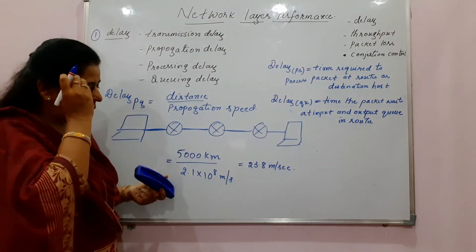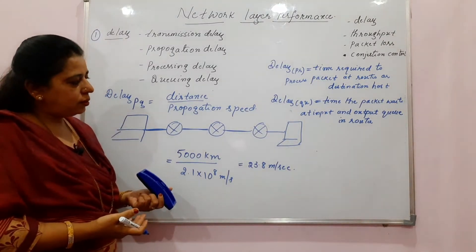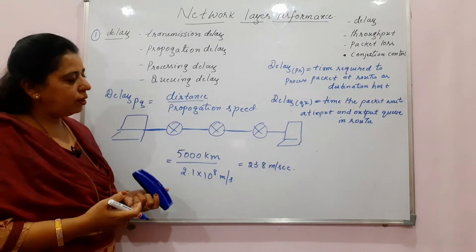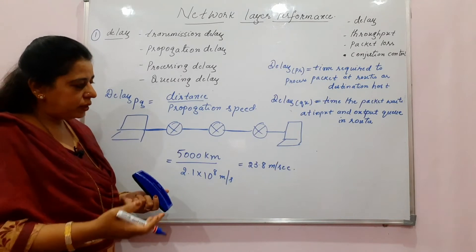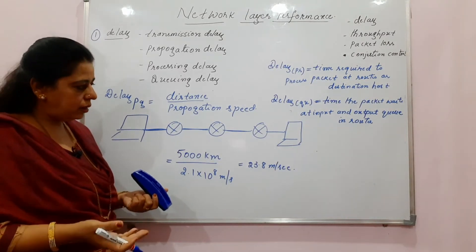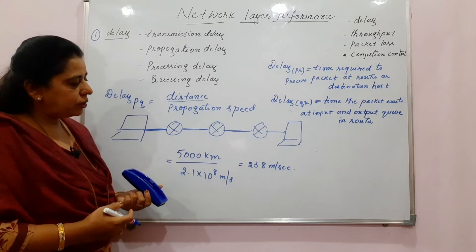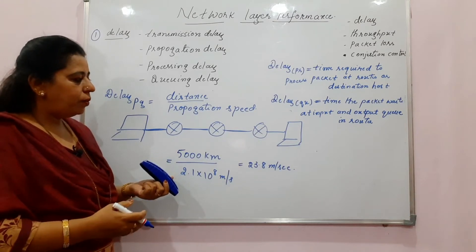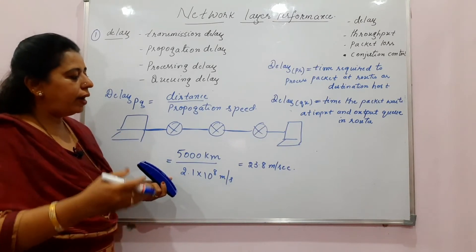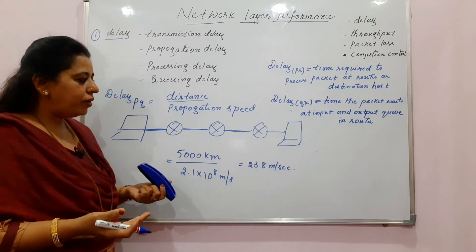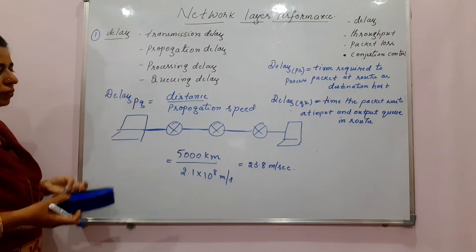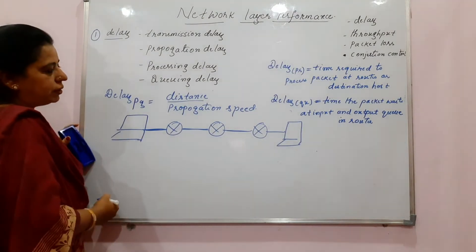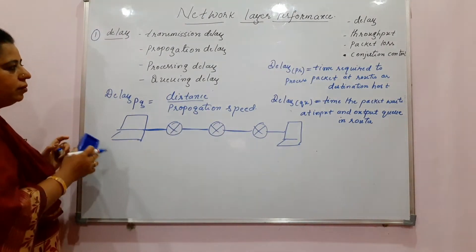A real-life analogy for propagation delay: when traveling by train, how long it takes to reach your destination depends on the distance between your boarding station and destination station, and the speed at which the train travels. Similarly, in a network, propagation delay depends on the propagation speed and the distance between the sender and the receiver.